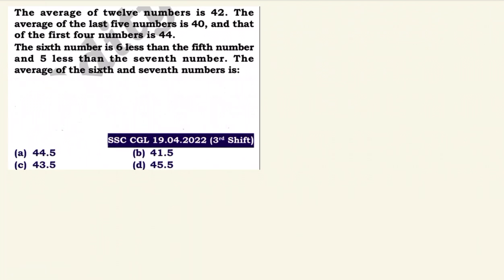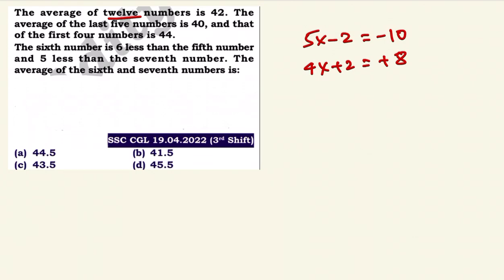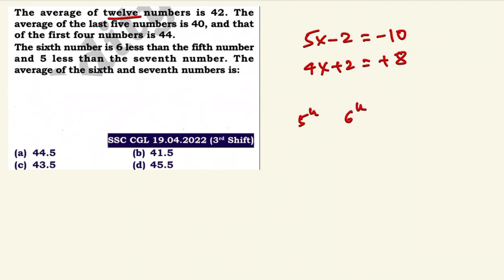Next question. The average of twelve numbers is 42. The average of the last five numbers is 40. The 6th, 7th, and 8th numbers are 6 less than the 5th number. Let the 6th number be x. Then the 5th number is x plus 6.